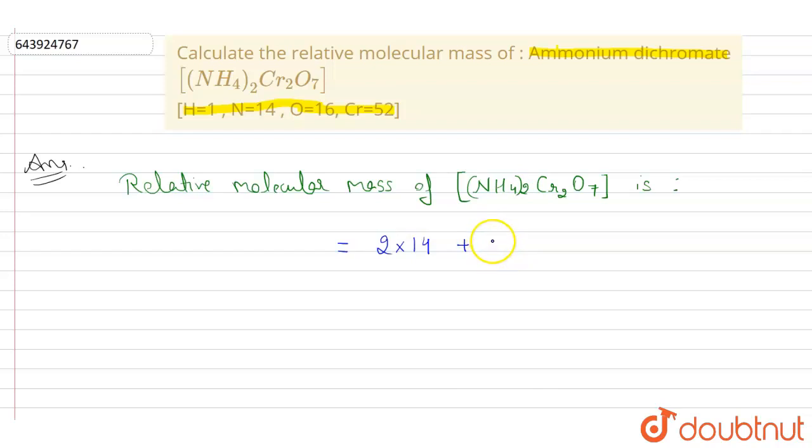Therefore, we will write as 8 into 1 plus there are 2 chromium atoms. Atomic mass of 1 chromium atom is 52. This is given in the question itself.